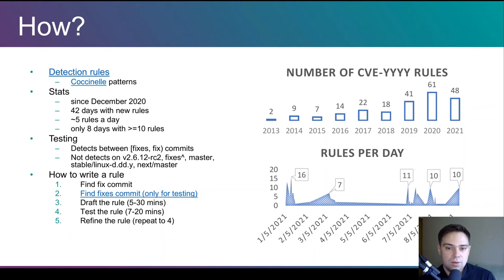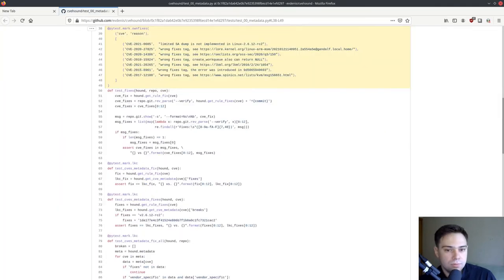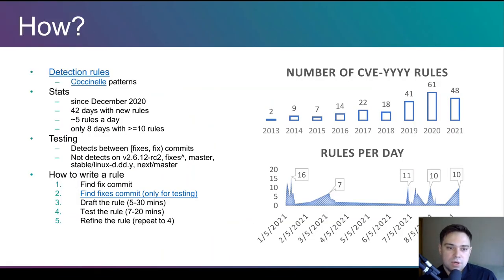The tool doesn't need a git log to work. Sometimes finding a fixes commit is not trivial — I even maintain my own list of wrong fixes tags I've found in various fix commits. Usually it takes about 5–7 minutes to draft an initial version of a rule and about 10–12 minutes to test it, with many iterations of refinement and testing.